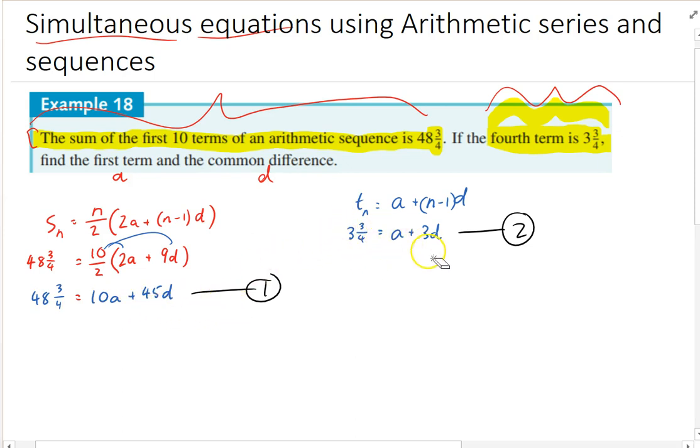I've got 3 and 3 quarters equals a plus 3d. You could do this on a calculator free test because it's really pretty simple. You've got 48 and 3 quarters equals 10a plus 45d, and you've got the other one, which is 3 and 3 quarters equals a plus 3d. So you could just multiply the bottom here by 10 and then subtract one from the other and solve it that way. Now, the mixed numbers are a bit weird. Like I said, we don't generally use them. You could just get rid of them by writing 48.75 and 3.75 if you wanted to.